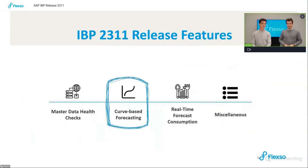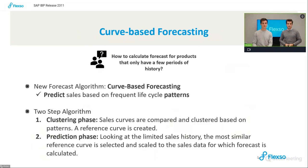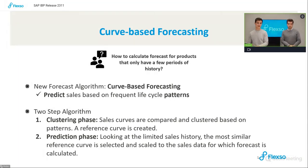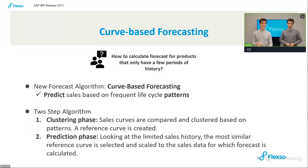The second topic is curve-based forecasting. The question often comes up: how do I calculate a forecast for a product for which I don't have a lot of sales history? The answer SAP provides is a new forecasting algorithm called curve-based forecasting, which tries to predict sales based on frequent life cycle patterns. It works in two steps: first the clustering phase, where we look at sales history and cluster it into specific reference curves.